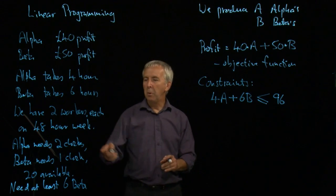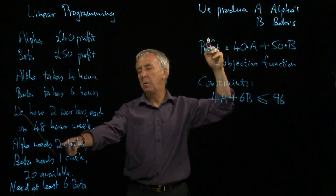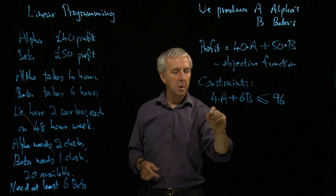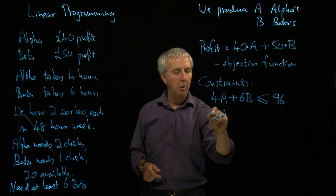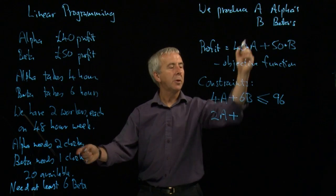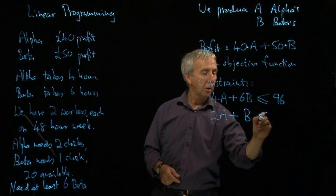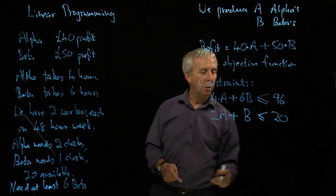We've also got a problem with clocks. If we make a of the type alpha and each one needs two clocks, that will take up 2a clocks. Each of the betas needs one, so that's b. And we've only got 20 clocks. So that's less than or equal to 20.